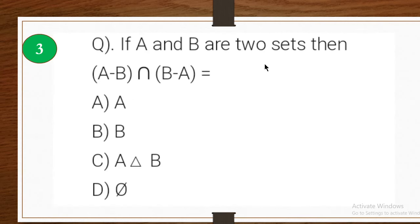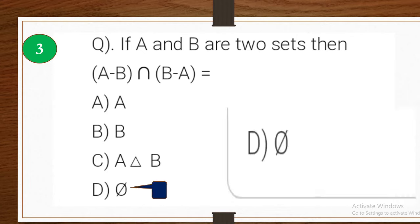Third one: if A and B are two sets, then (A minus B) intersection (B minus A) is — option A: A, option B: B, option C: A delta B, option D: null set. This is a direct formula. The correct answer is option D, null set.